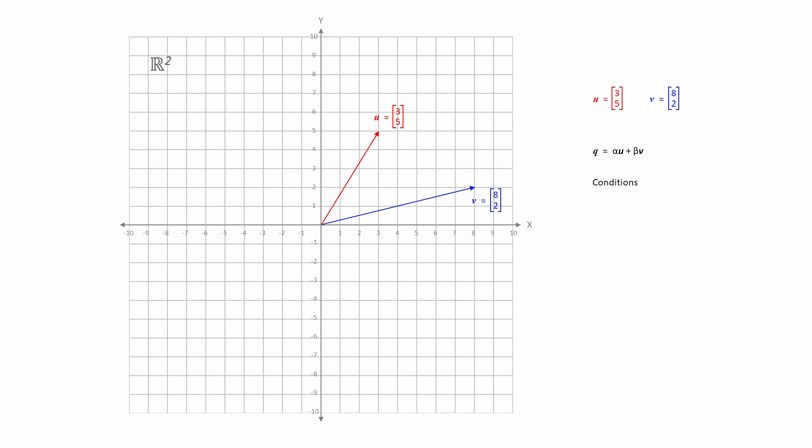However, for a linear combination to qualify as a convex combination, there are two conditions. Firstly, alpha plus beta must be equal to 1. Secondly, both alpha and beta must be greater than or equal to 0.